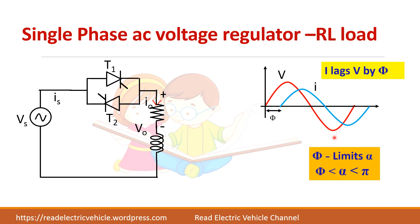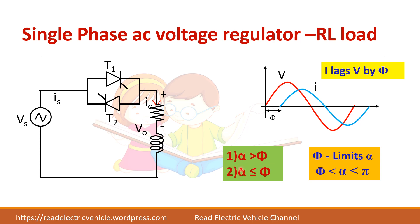In case of R load, alpha can be varied from 0 to 180 degrees, whereas in case of RL load, the load angle phi will determine the range of alpha. So we will see the performance for two conditions: alpha greater than load angle phi, and alpha less than or equal to load angle phi.